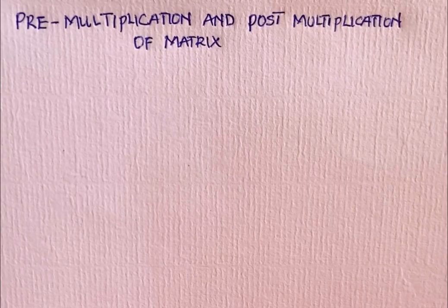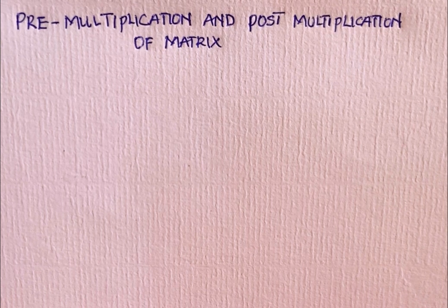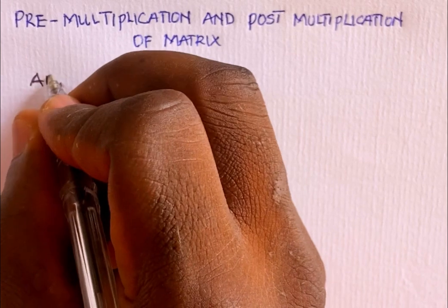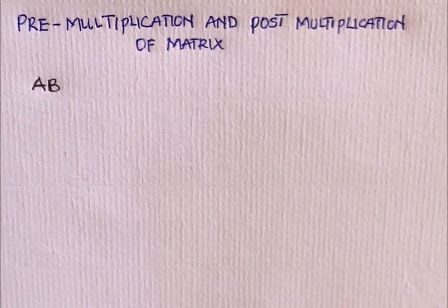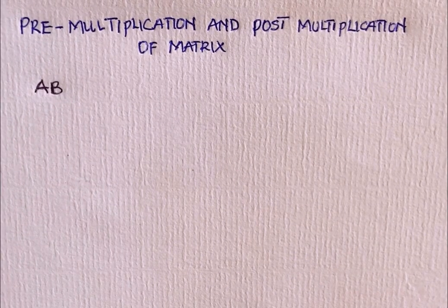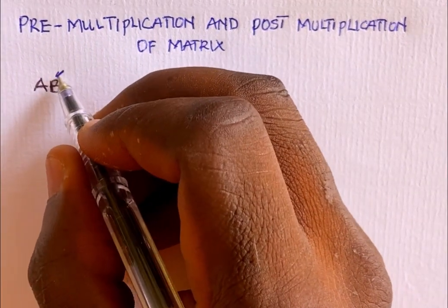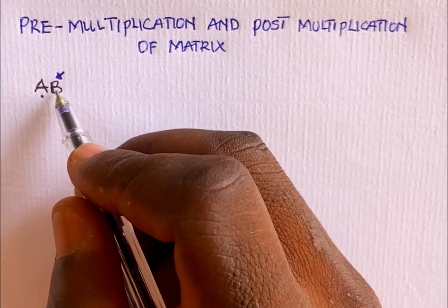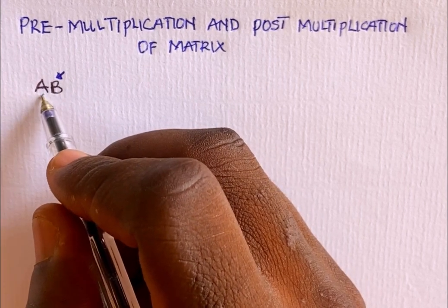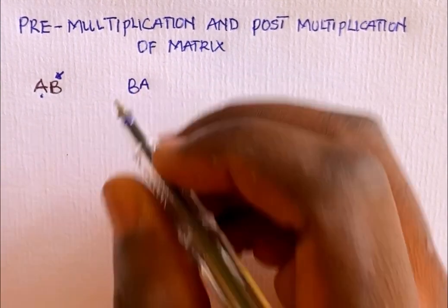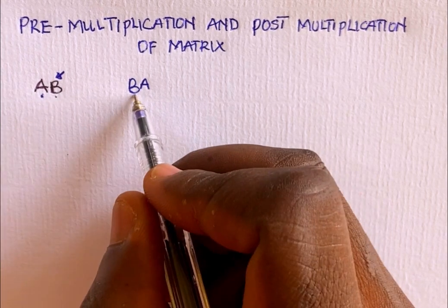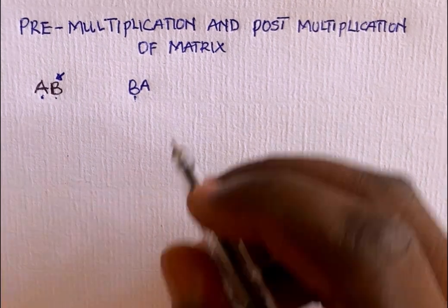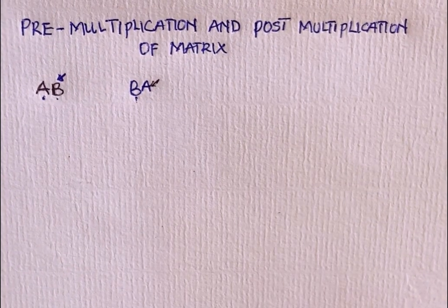Welcome to mathematics class. In this video, I'll be talking about pre-multiplication and post-multiplication of matrices. Matrix B is said to be pre-multiplied by matrix A whenever we have matrix AB. But if we have matrices BA, then matrix B is said to be post-multiplied by matrix A.